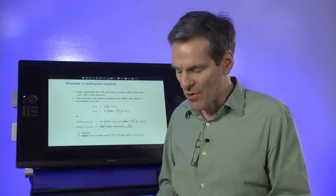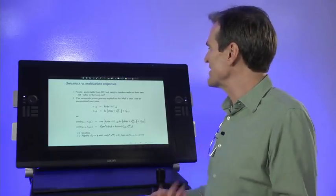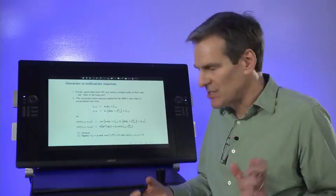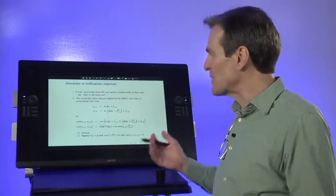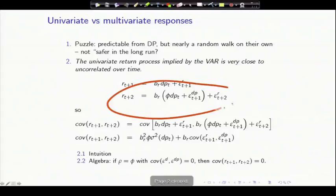Well, let's get past stories and do actual analysis. What is the univariate return forecast implied by the VAR? Is there a tension, or are these things consistent? How do we do that? Well, there's the one-period return, right? That's what our VAR tells us about the one-period return. The two-period return, I just substituted in where tomorrow's dividend yield goes. So that's the one-period return and the two-period return.